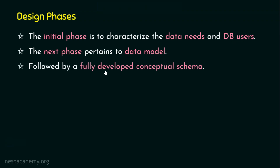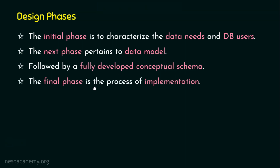After choosing the data model in phase two, the third phase involves developing the fully developed conceptual schema, which covers the tables, columns, and relationships among all items in the design. The fourth and final phase is implementation — the process of moving from an abstract data model to the actual, database-specific implementation.